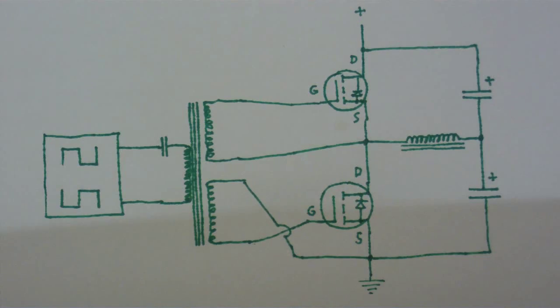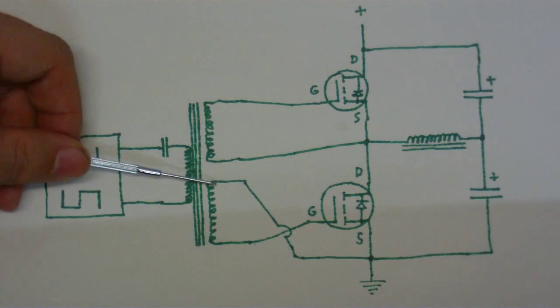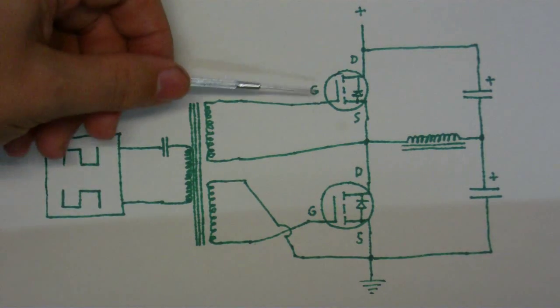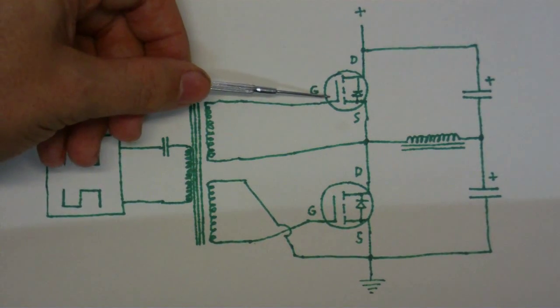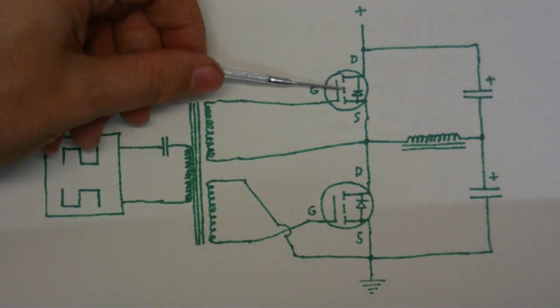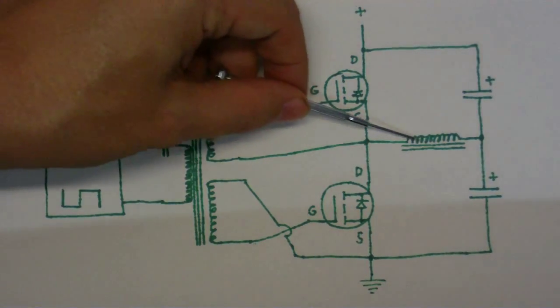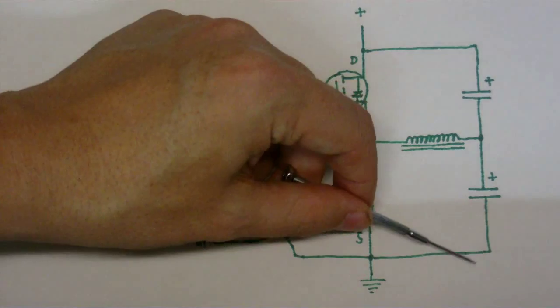So when the gate drive transformer's pulsed one way, this side of the secondaries becomes positive. So we get a positive charge on this MOSFET and a negative charge on this MOSFET. So this MOSFET turns on and the power goes through it this way and into the coil and into this capacitor like that.